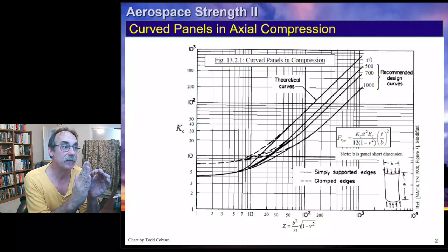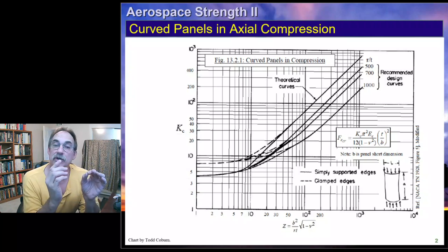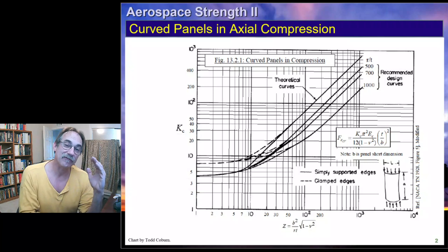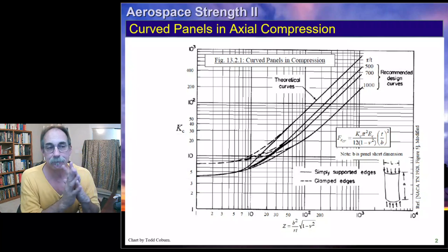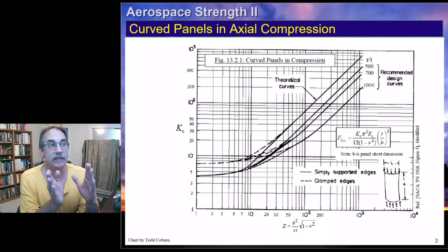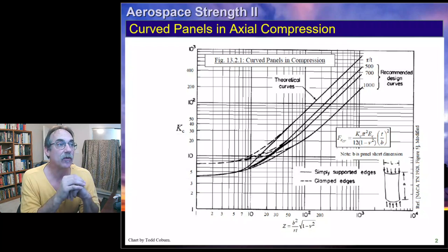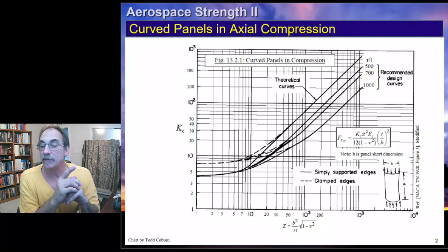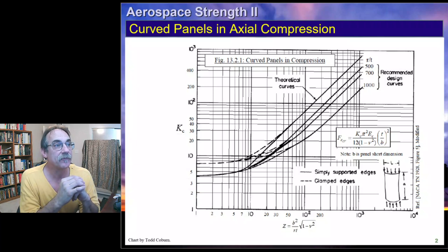We then just come to this log-log curve and go up to our R over T ratio. You'll notice we have values between 500 and 1,000. We can interpolate between those values, or just read the graph, or even estimate just a little bit beyond the graph if that's appropriate. We're typically going to ignore the theoretical values, since they're a little bit unconservative.